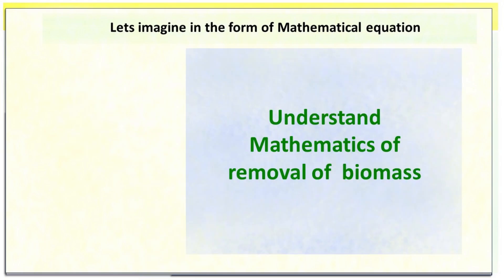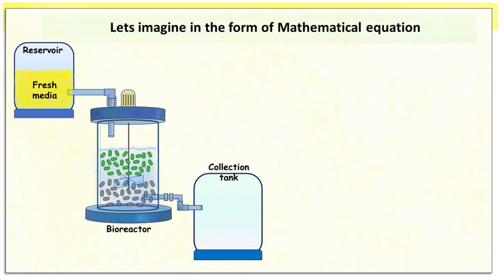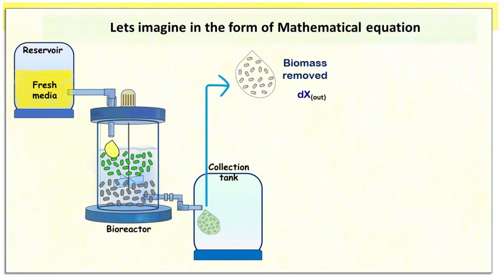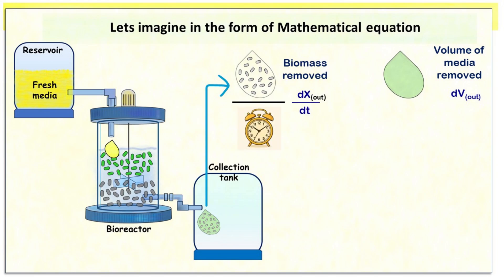In continuous culture, media is coming in and old media along with biomass is going out. Whatever biomass has been removed, let's call it dx, and whatever media has been removed, let's call it dv. Since time is running, these become dx/dt and dv/dt respectively.